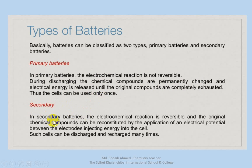In secondary batteries, the electrochemical reaction is reversible. Both charging and discharging reactions occur. The chemical compounds can be reconstituted by applying an electrical potential between the electrodes, injecting energy back into the cell. Such cells can be discharged and recharged many times.